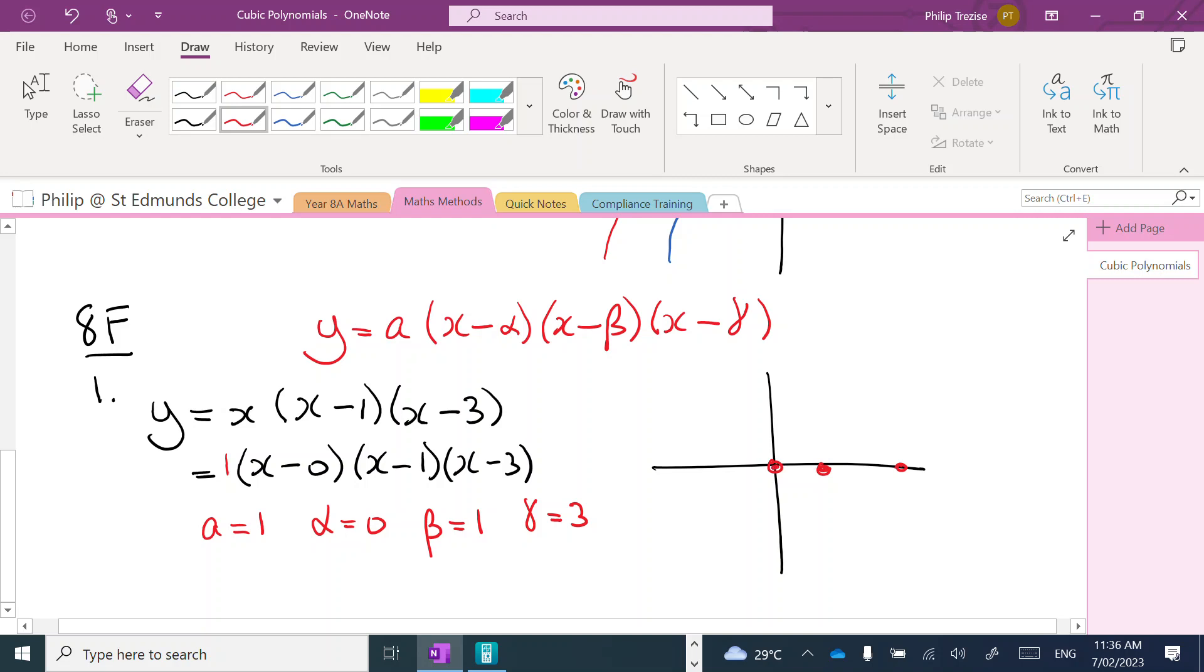Now because a is positive 1, we need to do what we call a sign diagram. Those are the roots of the equation where the graph will cross the axis.